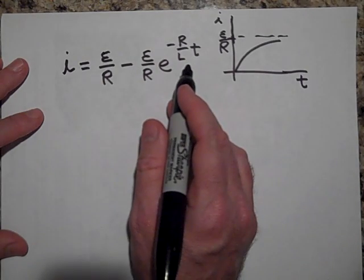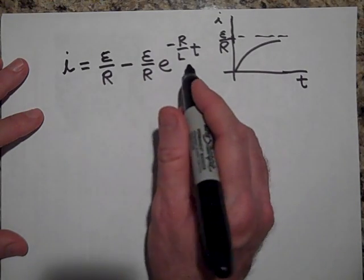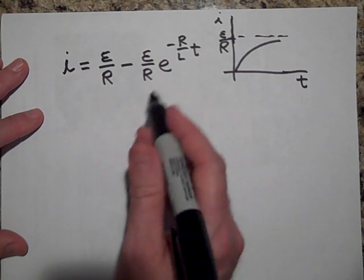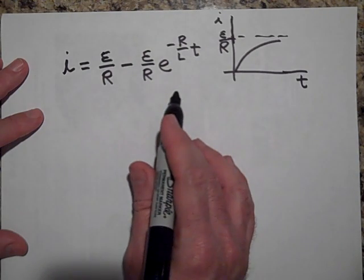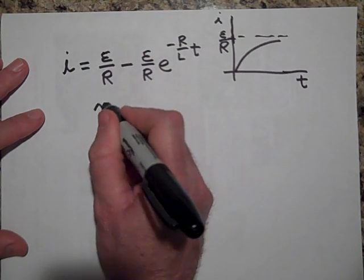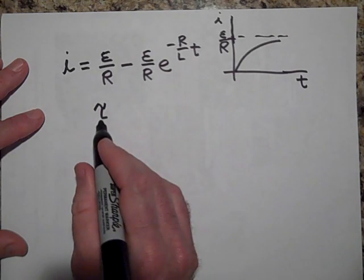Now, the time constant is going to be a very specific time, the time of L over R. So our time constant is going to be designated with a fancy T or a tau, really.